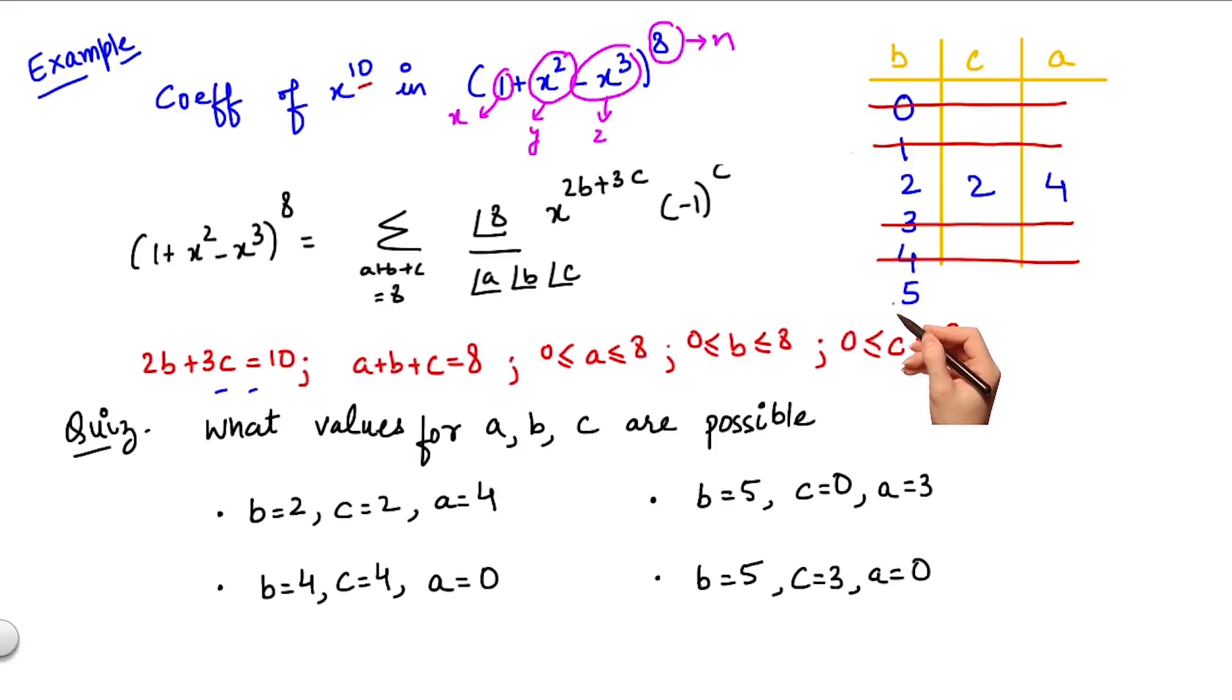Let's try out for b equals 5. For b equals 5, c becomes equal to 0, which could be likely. And a becomes equal to 3. And this satisfies all the conditions, therefore this is also one possible scenario.